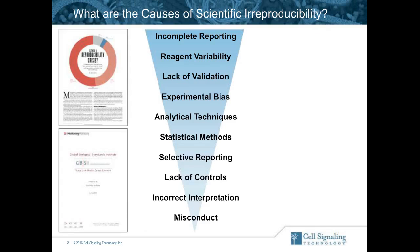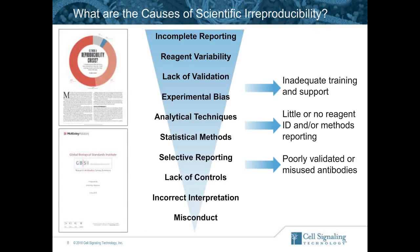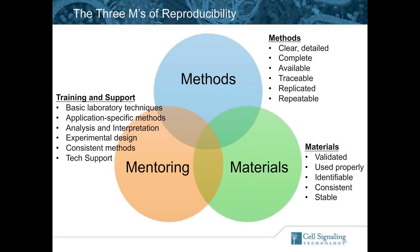What it really comes down to, at least for CST, is that we can break all of these down into three basic categories. We feel that all of the issues come down to three problems: inadequate training and support, little or no reagent identification or methods reporting, and poorly validated or misused antibodies. At CST, we call those the three M's of reproducibility. Reproducibility comes down to three things: methods, materials, and mentoring.